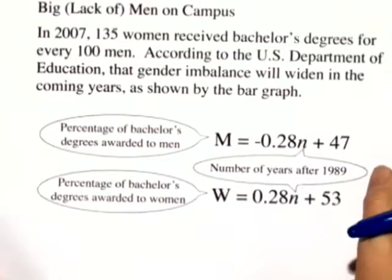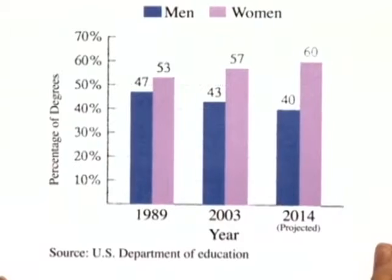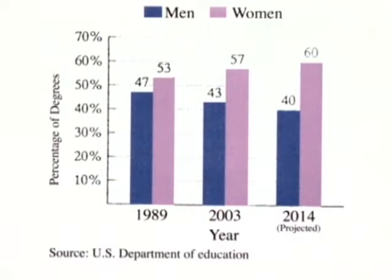The bar graph shows the percentage of bachelor's degrees awarded to United States men and women. We have three time periods shown: 1989, 2003, and 2014.